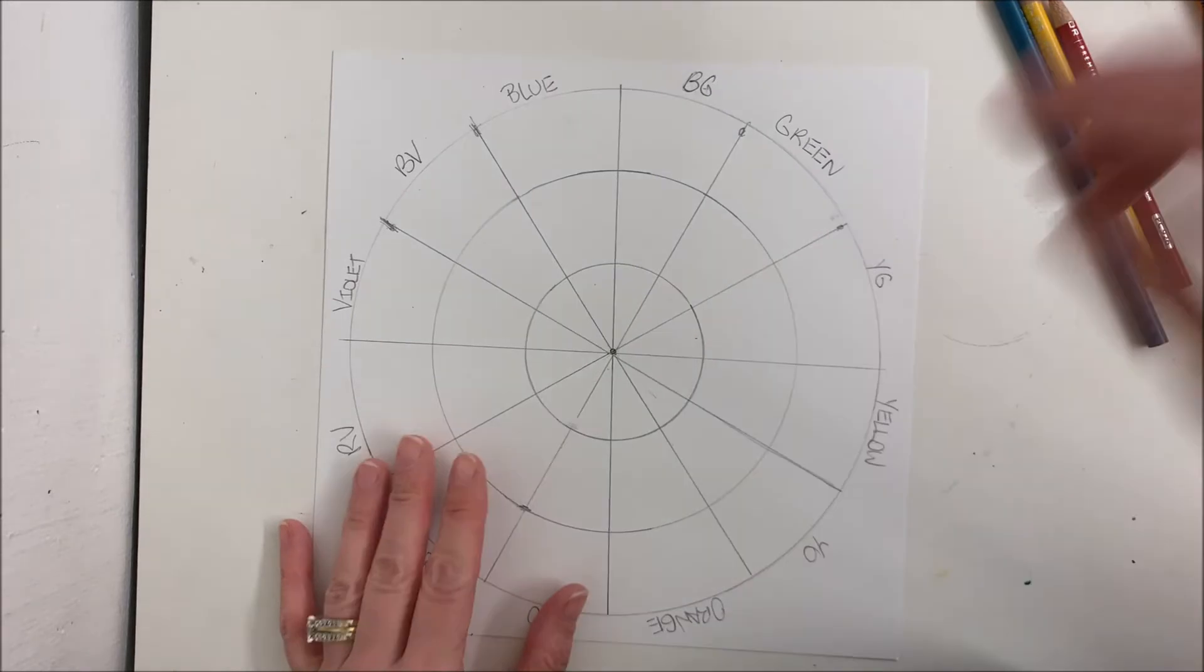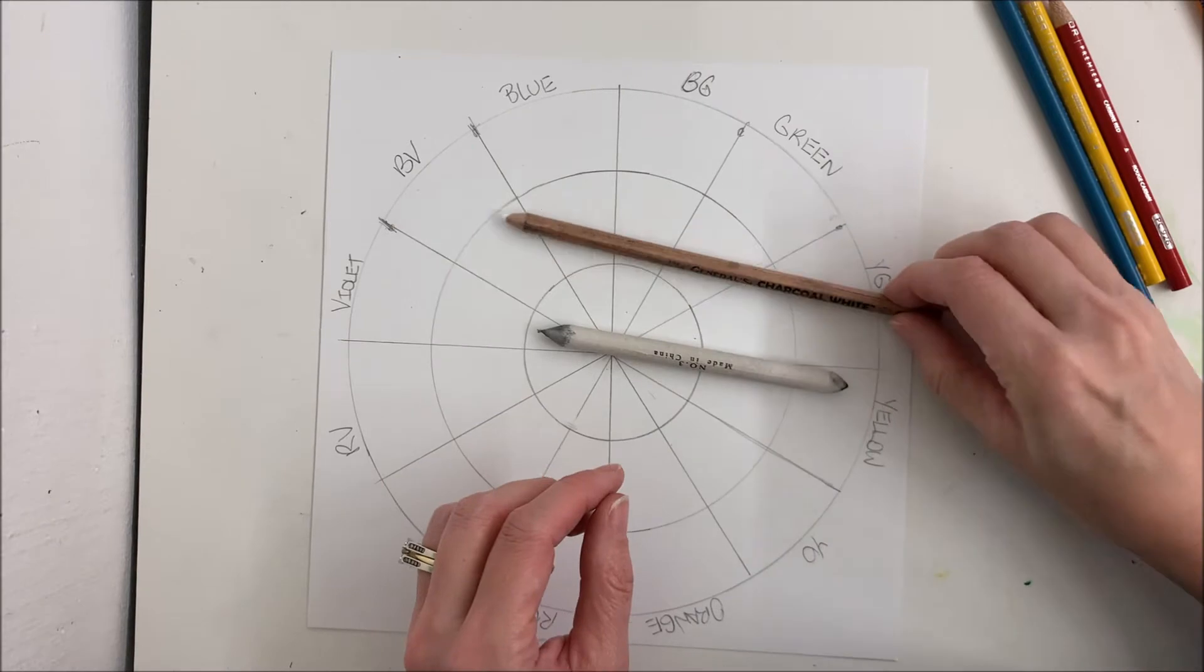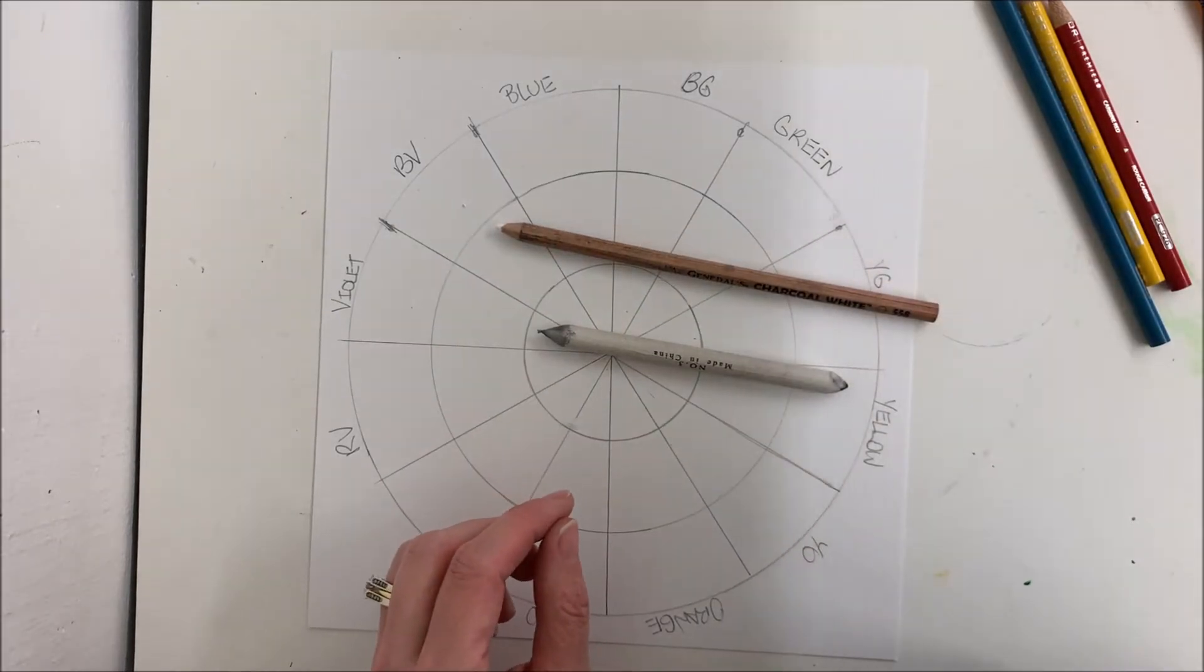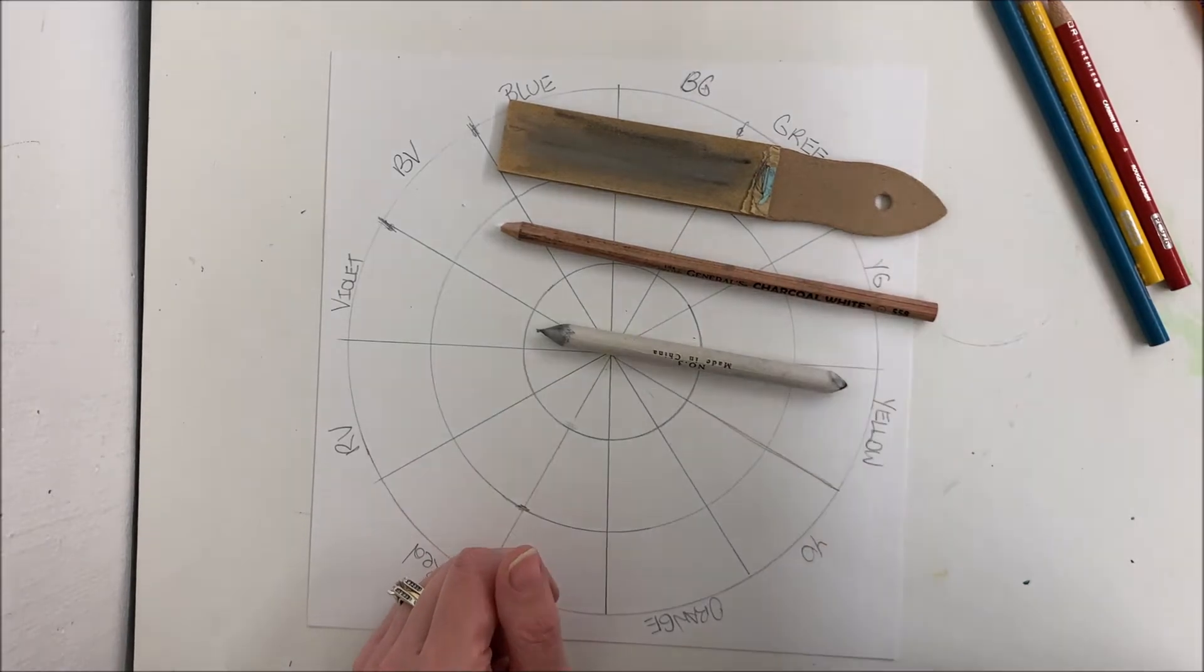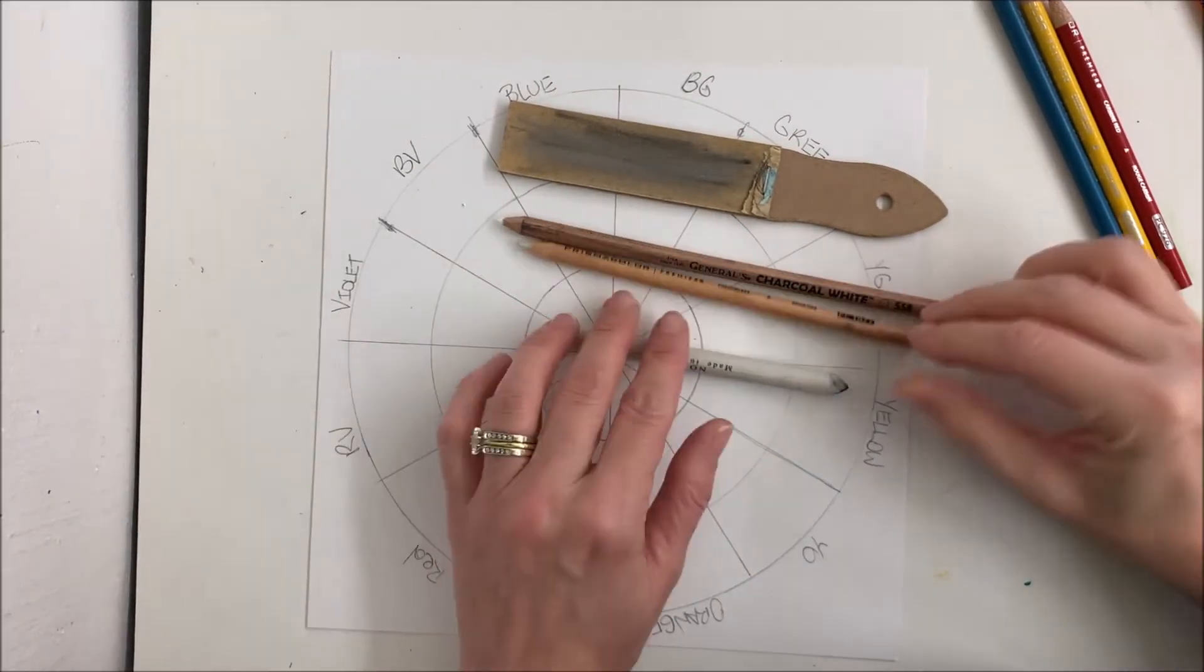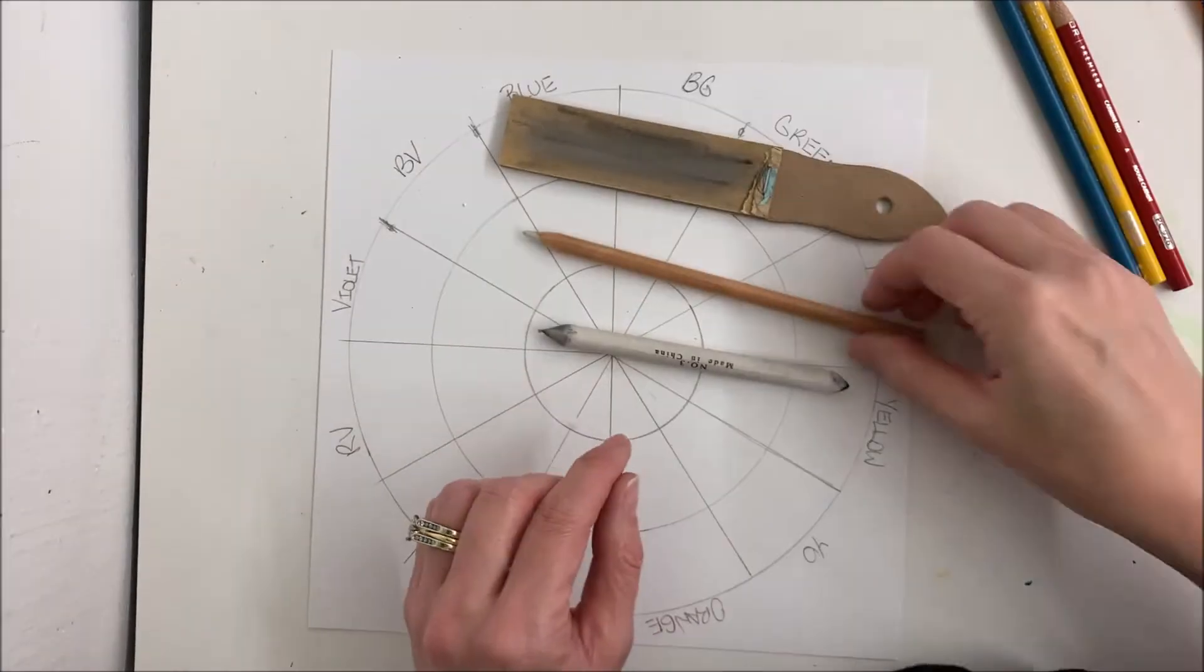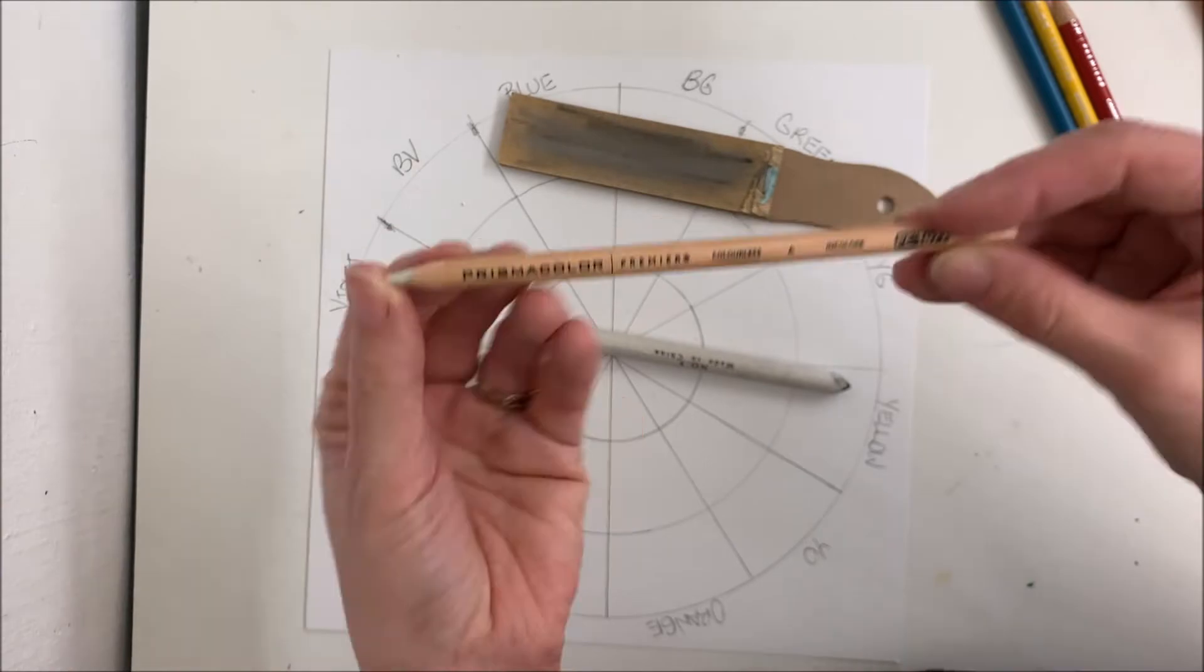Now you can also use a blending stump or a colorless blender. You'll need your sandpaper paddle if you have it. Oh, that's not a colorless blender, that's charcoal. This is my colorless blender. There we go. Colorless blender is just a colored pencil with no pigment in it. It's just wax.